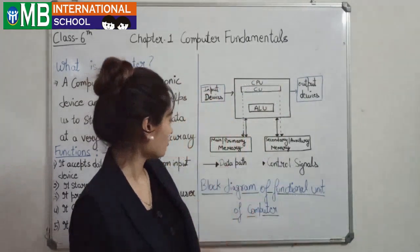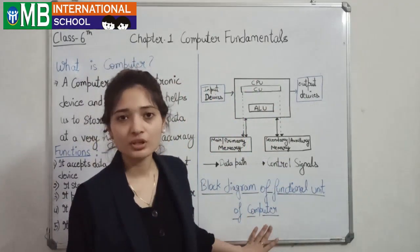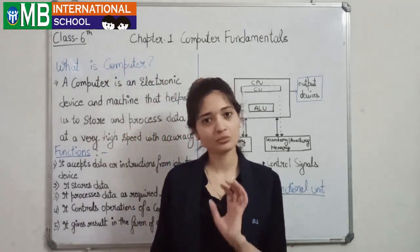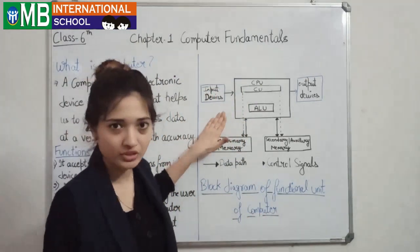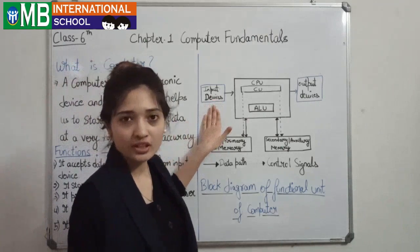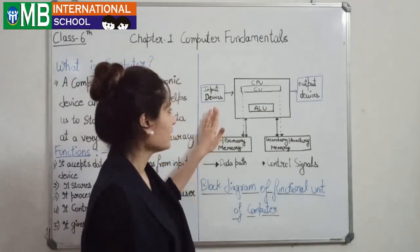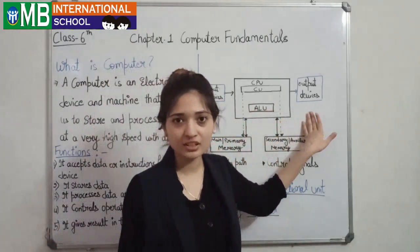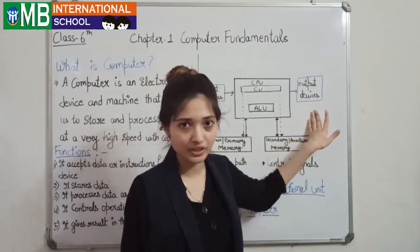Now we discuss about the block diagram of the functions and units of the computer. This is the block diagram of the computer. First, we give instructions to the computer through the input device. Then it processes in the CPU. Then it gives the result through the output device.